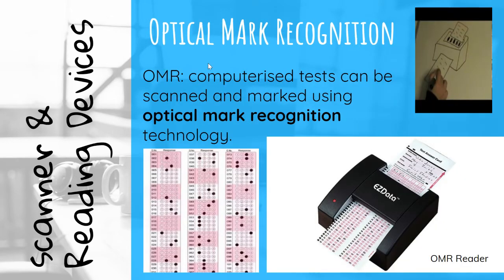Optical Mark Recognition (OMR): Computerized tests can be scanned and marked using OMR technology. For example, at university, first-year exams often used 100 multiple-choice questions with negative marking. You would circle each answer with a pencil on a special sheet, which gets fed through a machine that recognizes whether each answer is correct or wrong and gives you a mark.